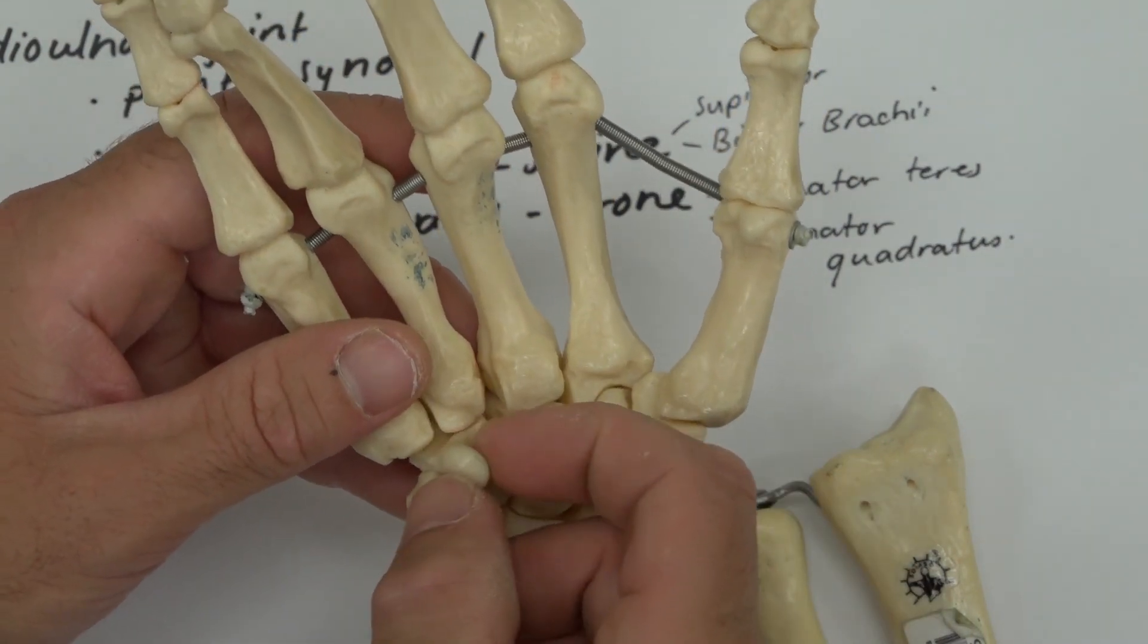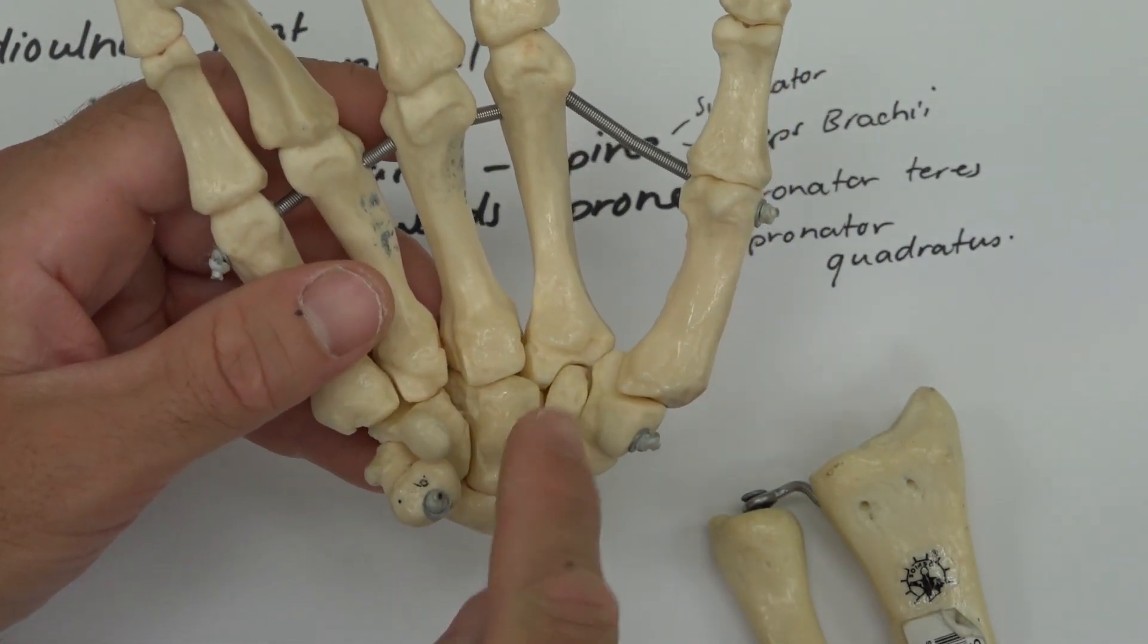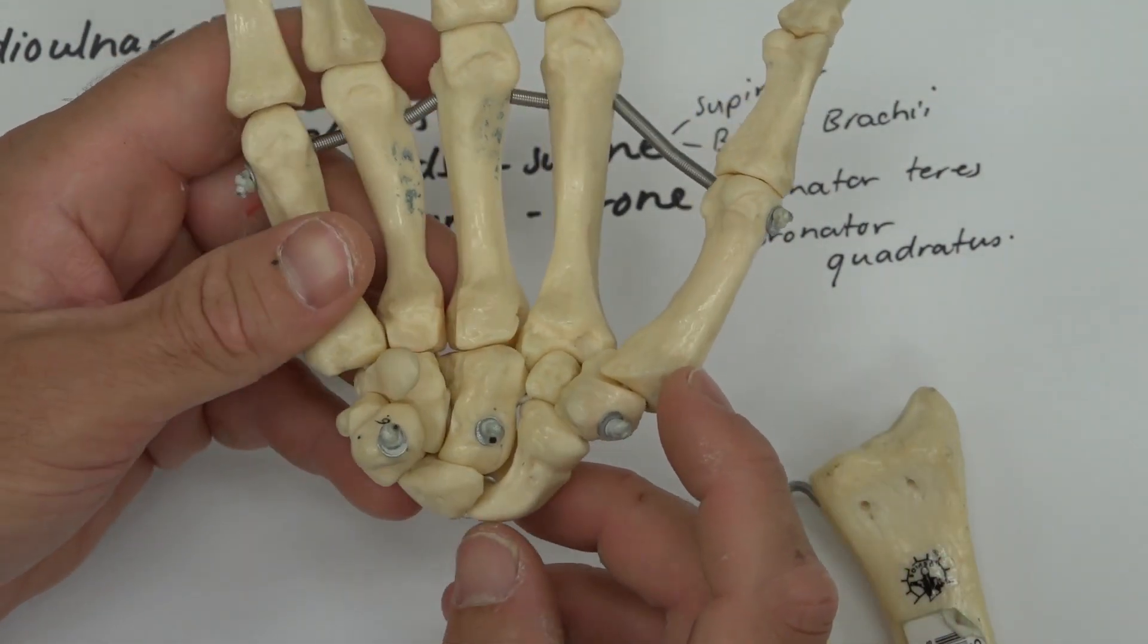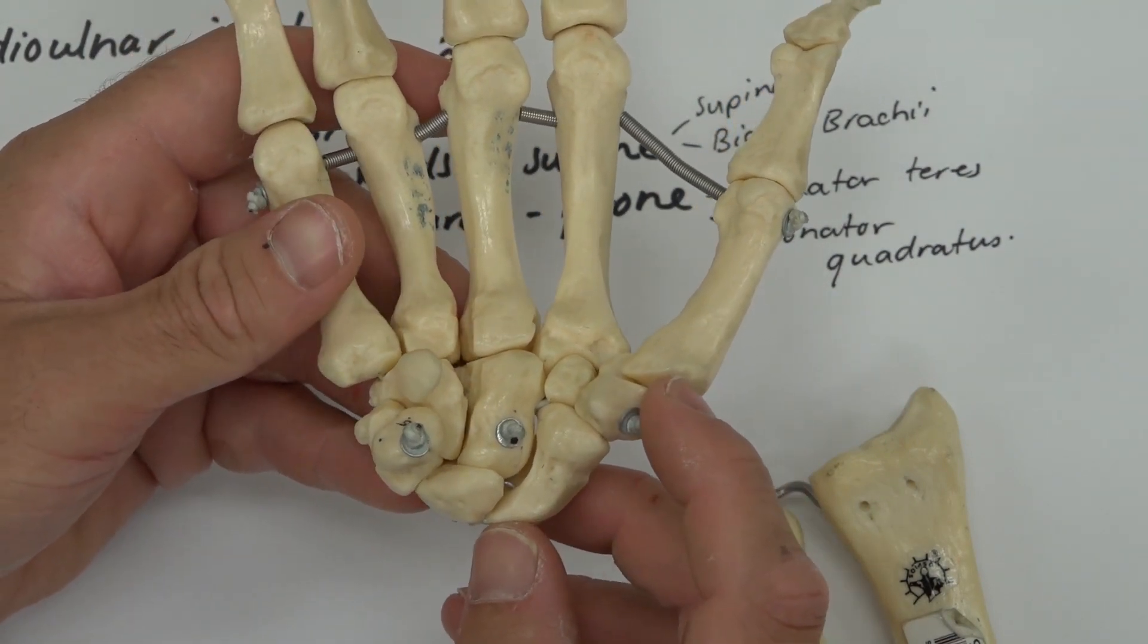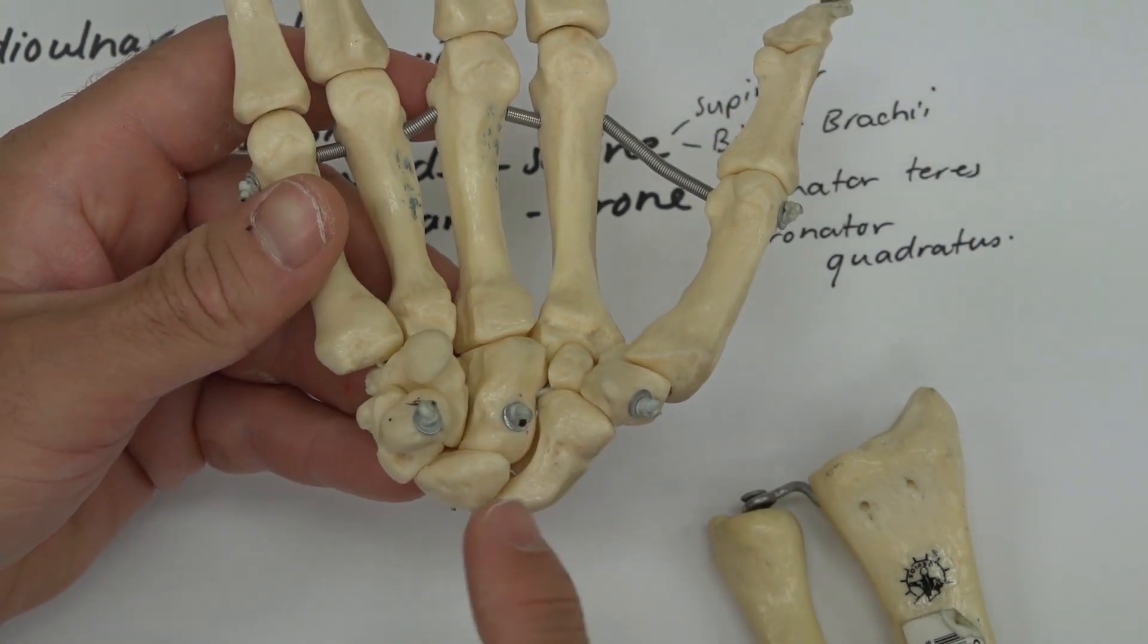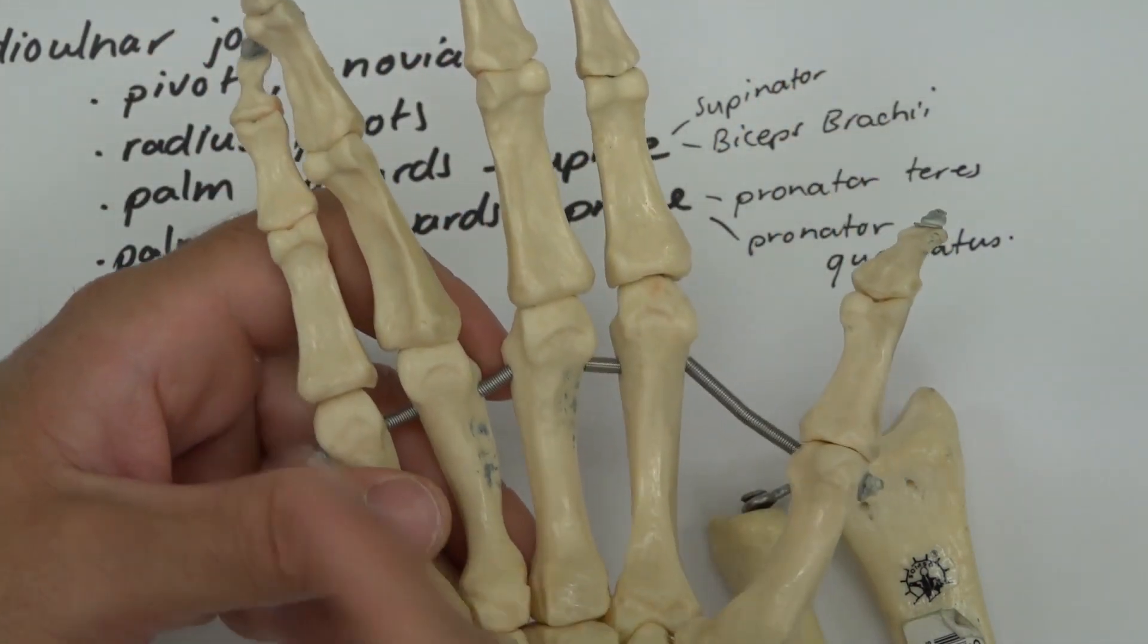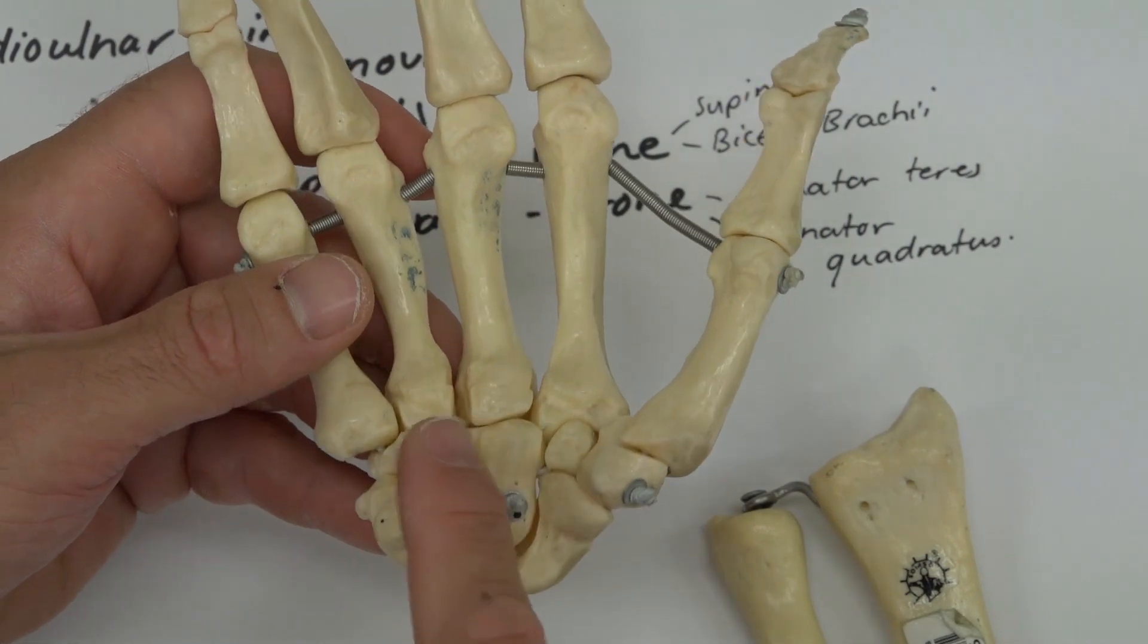This bone here with the hook on it is the hamate, and we have the capitate, the trapezoid here trapped between all the bones, and the trapezium which is under your thumb. There are a few different mnemonics you can use. One we can do here is: scaphoid—so long the pinky, here comes the thumb.